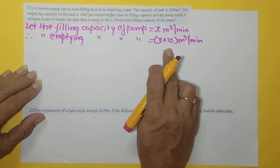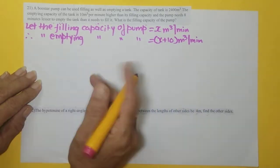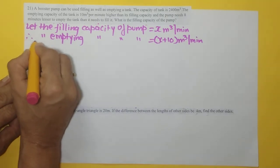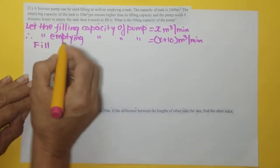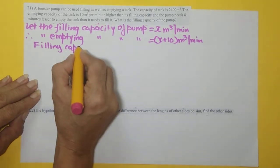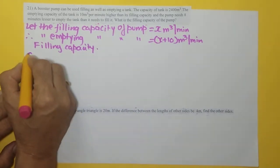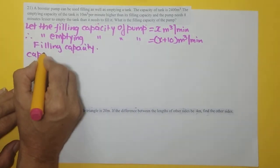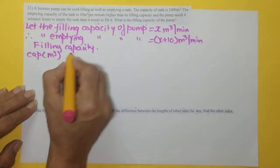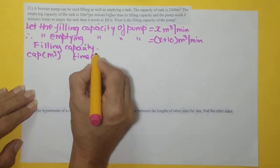Why? Because it is 10 meter cube per minute higher. Now let us take two different columns: filling capacity, if we take capacity in meter cube and time in minutes.